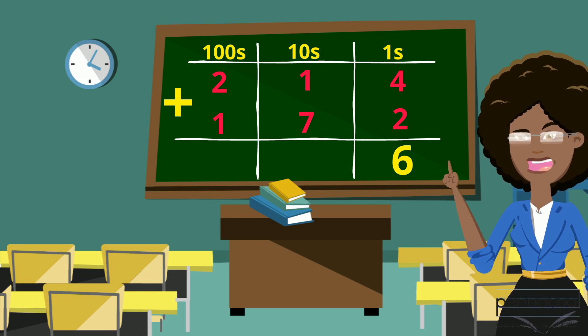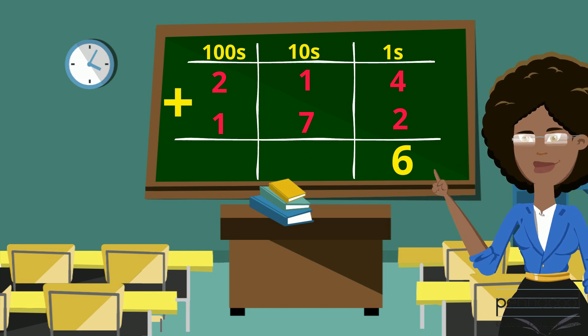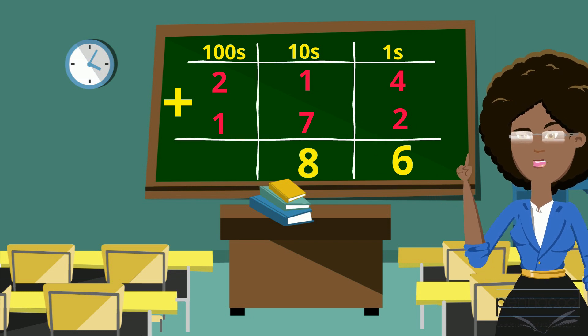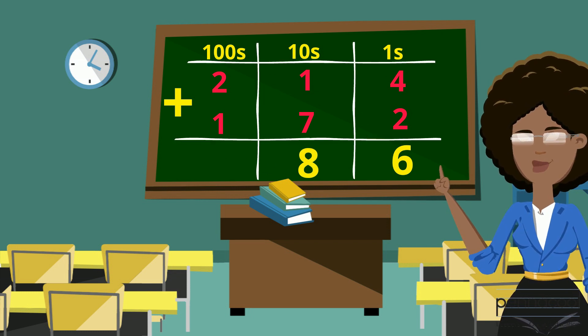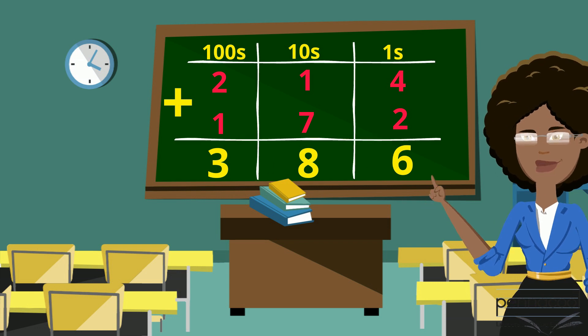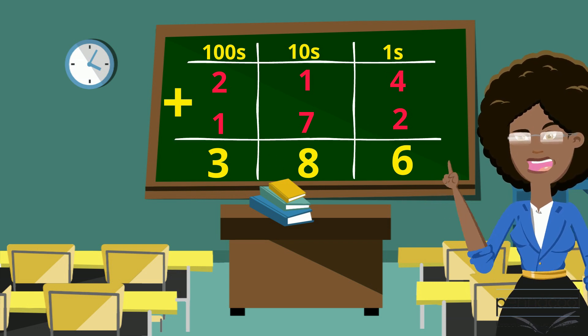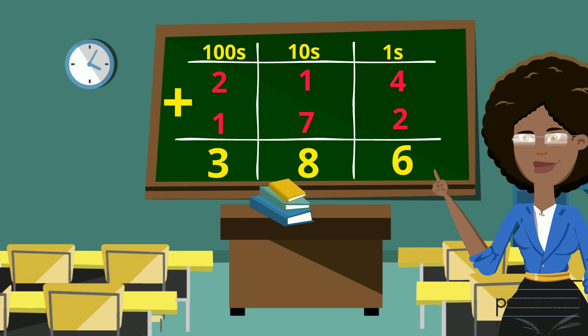Then, in our tens column, we're adding 7 and 1, which is 8. And in our hundreds column, we're adding 2 and 1, which is 3. So our final answer in our total space, we have 3, 8, 6, which is 386.